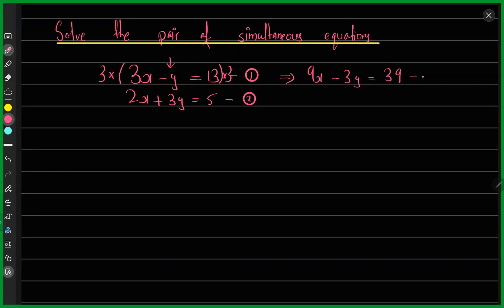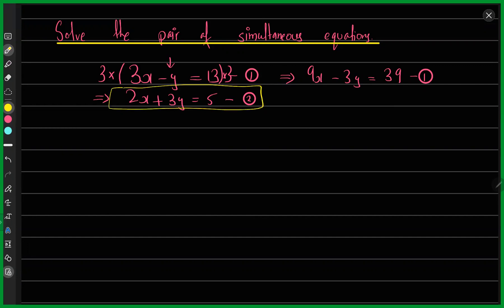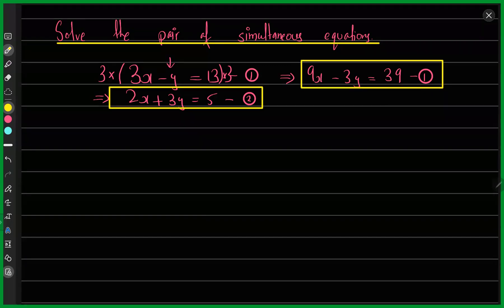So 3 multiplied by 3x minus y equals 13 gives me 9x minus 3y equals 39. Think of this as the new equation 1. I had something else originally for equation 1, but multiplying both sides by 3 is mathematically correct, and now I have two equations I can use with the elimination method.